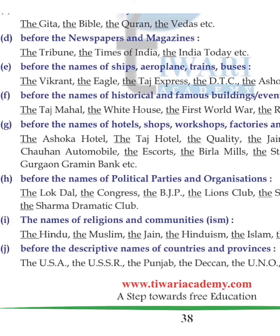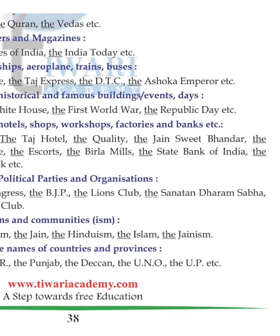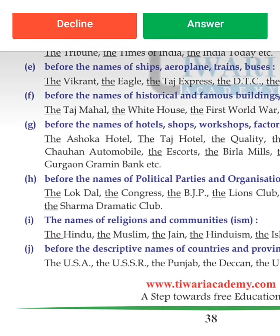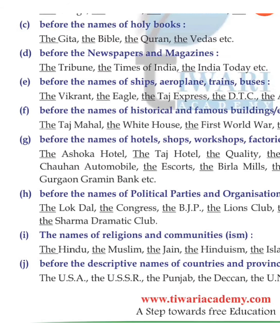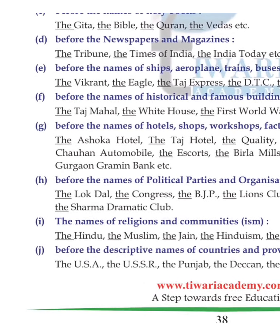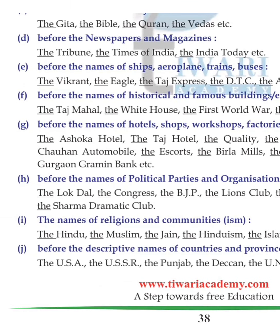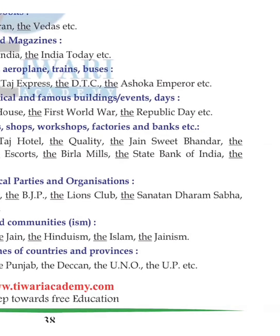'The' is used before names of religions and communities: the Hindu, the Muslim, the Jain, the Hinduism, the Islam. Also before names of countries and provinces: the USA, the USSR, the Punjab, the Deccan, the UNO, the UP, etc.